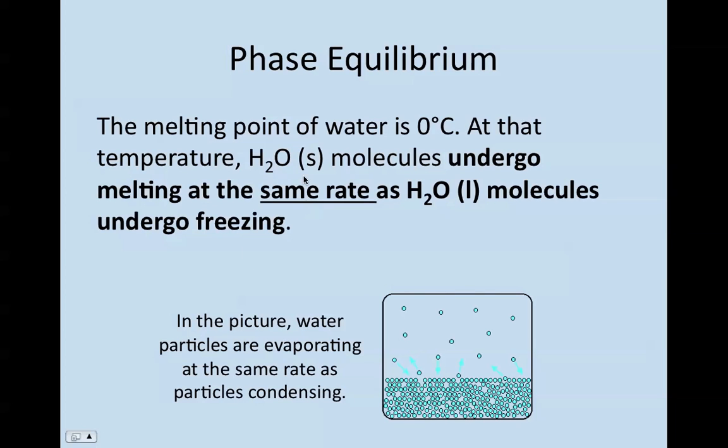So if I have water molecules, and they're held at zero degrees Celsius, we're going to find that at that phase change temperature, the solid molecules are undergoing melting at the same rate or speed as the water and liquid molecules undergo freezing. So here in this picture, we're actually looking at evaporating and condensing. So you can see the arrows right here in the middle. If this is at equilibrium, the rate of evaporating is going to be the same as the rate of condensing at equilibrium.